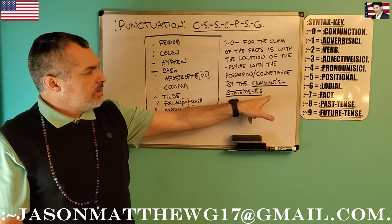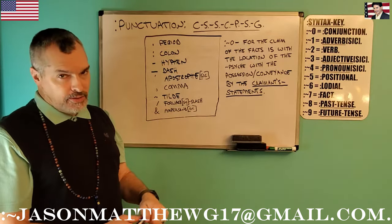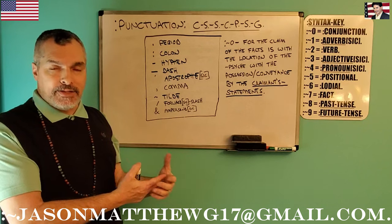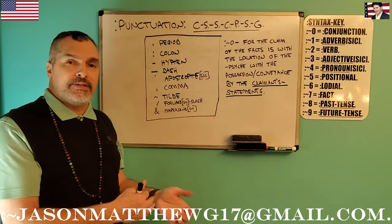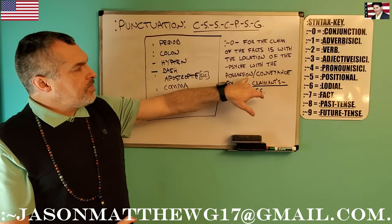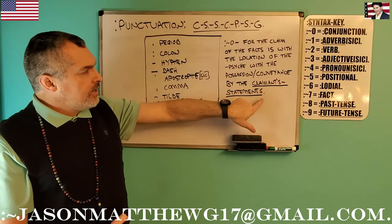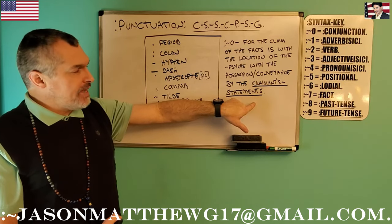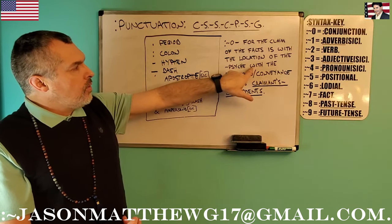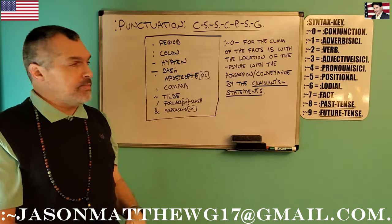I did not underline the period at the end. And I also used the apostrophe to show whose statements — who the statements belong to. So now reading it backwards, because like a math problem, we have to check the grammar backwards to see if it makes sense, if the facts hold the same value forwards as they do backwards. So now this becomes: 'the cause for the claimant's statements of the possession and conveyance are with the psyche of the location, with the facts, by the claim.' Period. Now the verb is 'are' because the fact within the cause portion of the sentence is plural, so the verb must be plural.